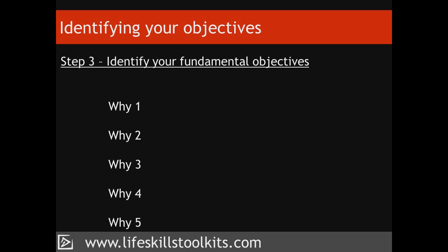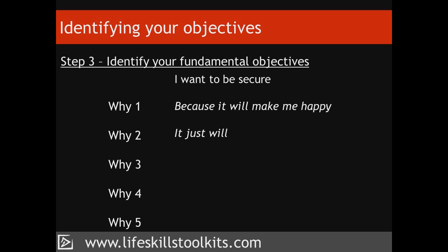When using the five whys technique, you won't always need to ask why five times. For instance, the answer to the first why of the objective 'I want to be secure' might lead to 'Because it will make me happy.' When you ask why will being secure make you happy and your response is 'It just will,' you know that you've reached your fundamental objective. With some objectives, asking why five times helps you drill down to the core issue. With others, you'll discover after one or two whys that you're pretty much there. Having completed this step, you will now have a list of fundamental objectives.